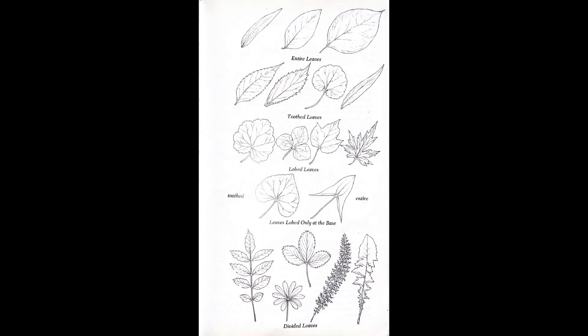After you've determined your leaf type, you can use a three-digit code to help you identify which plant you have found.